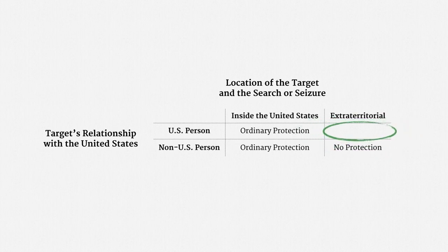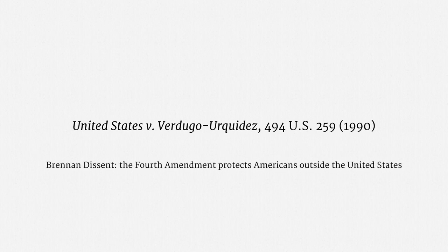Now let's turn to the final category in our grid: U.S. persons who are traveling outside the United States and are the target of a search or seizure outside the United States. In these cases, the Fourth Amendment still applies — that's long been the understanding among courts. In fact, in the Verdugo-Urquidez case, Justice Brennan made a point of this very issue. He expressly noted that every court of appeals to consider the issue has held that the Fourth Amendment protects U.S. persons outside the United States, and he expressly noted that the majority opinion in no way altered that protection.